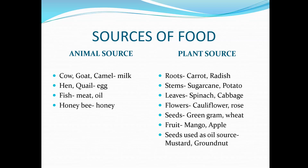Human beings consume a variety of animal products as food. Different animals provide us different types of food products. We get milk from cow, buffalo, goat, and camel. We get eggs from hen and quail. Fish gives us meat as well as oil, and honey is obtained from honeybees.